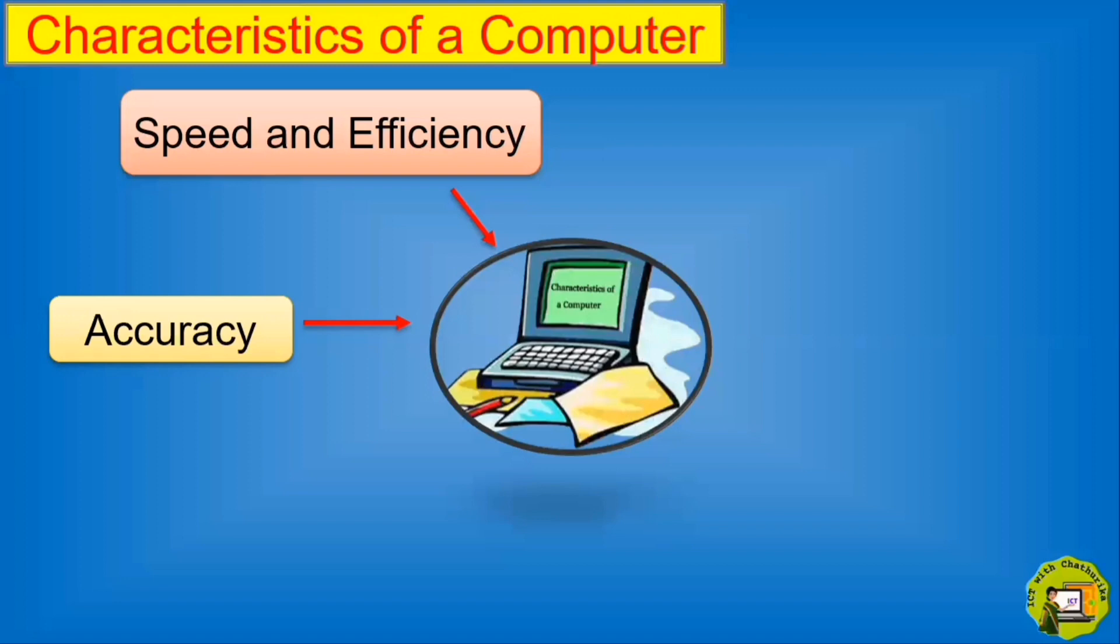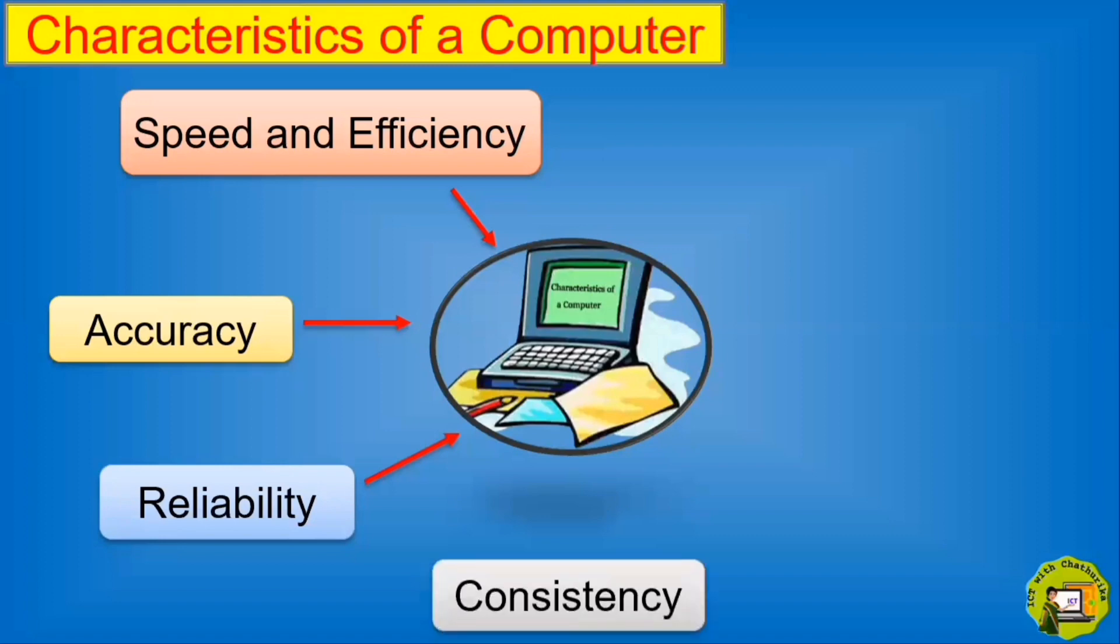Next one is reliability. A computer is a reliable device. It has the ability to perform its required functions for a given period of time. Consistency. What is consistency? Computer works in a consistent way and it does not become bored with us.